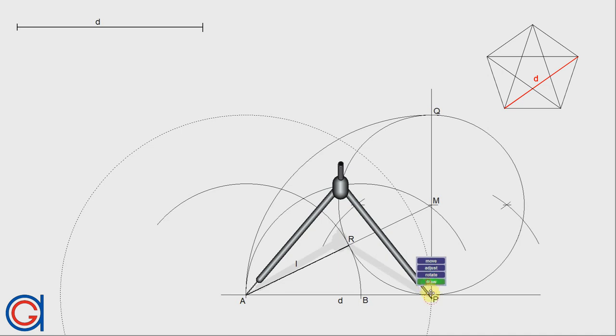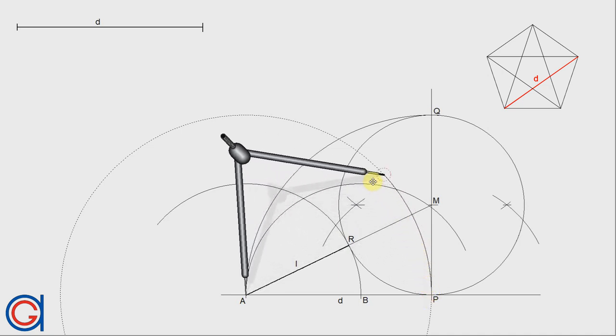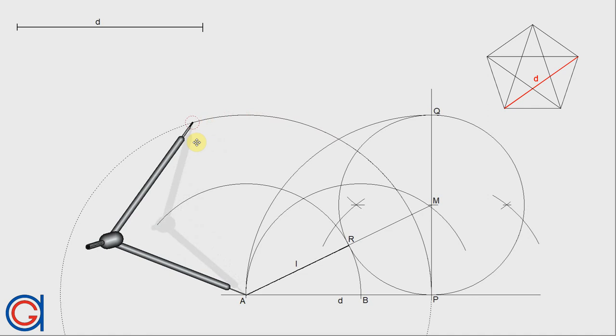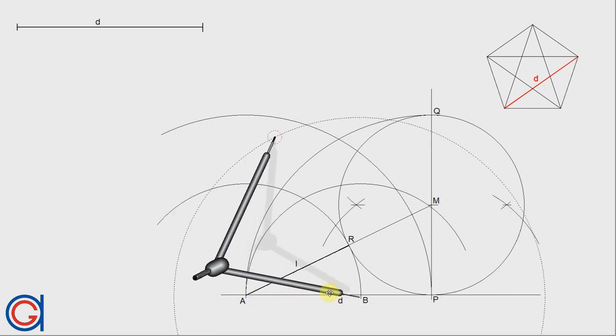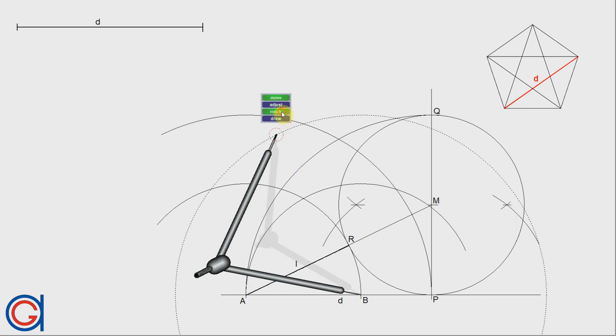The next step is to draw two larger arcs from the same points with a radius equal to the given side D, which is also equal to the length of the line segment AP. So setting the compass on point A, we scribe an arc to the left, cutting our previously drawn arc at a new vertex.